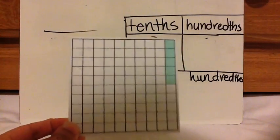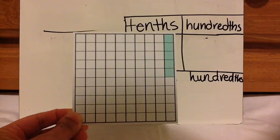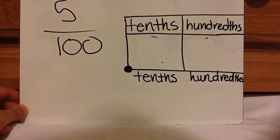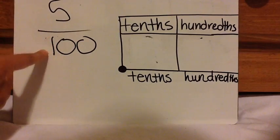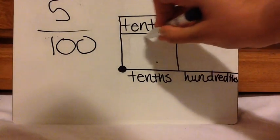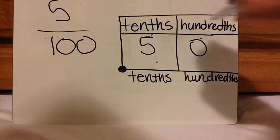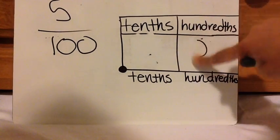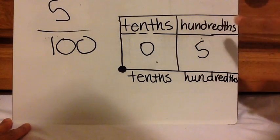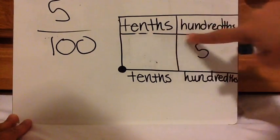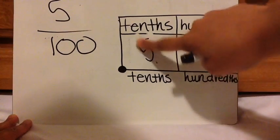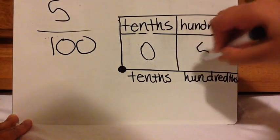Here is another one. Press pause and then play when you're ready to check. There are five shaded in out of one hundred. Pay very close attention to this. When I read this, it's five hundredths. So the five has to be in the hundredths place. Writing 0.50 is actually fifty hundredths, and 0.5 is five tenths. So the correct answer for five hundredths is 0.05.